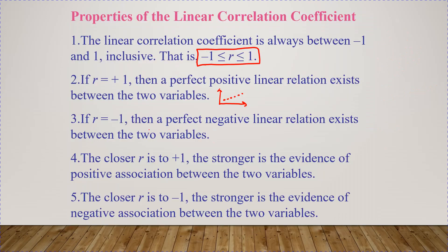If r equals negative 1, then a perfect negative linear relationship exists between the two variables — literally a perfect straight line going down. If r is closer to positive 1, like values of 0.9 or 0.99, the stronger the evidence of a positive association between the two variables. The flip side: if r is closer to negative 1, the stronger the evidence of a negative association.